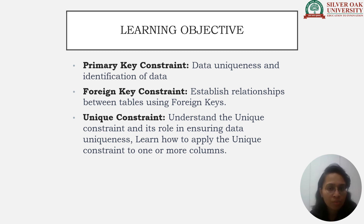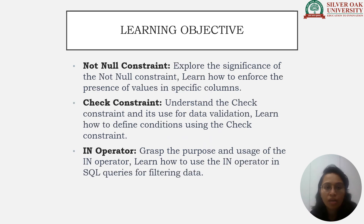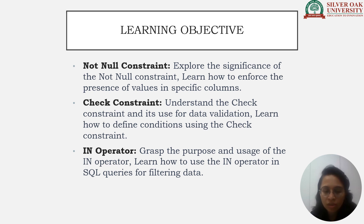Why should you learn about Primary Key, Foreign Key, and Unique Constraint? Primary Key Constraint is used for data uniqueness and identification of unique data. Foreign Key Constraint is used to establish relationships between tables using foreign keys. Unique Constraint ensures data uniqueness and how to apply it on one or more columns. Not Null Constraint explores the significance of enforcing the presence of values in specific columns.